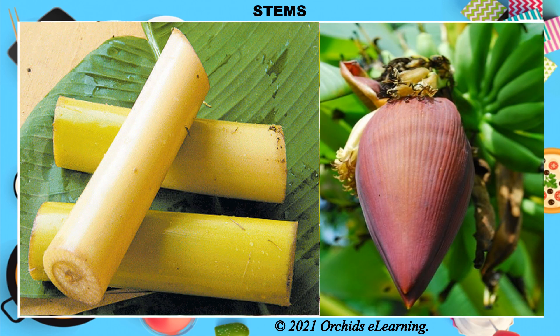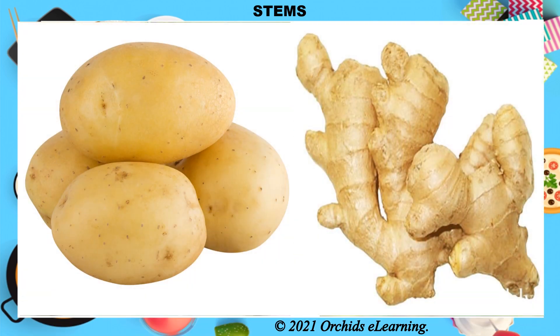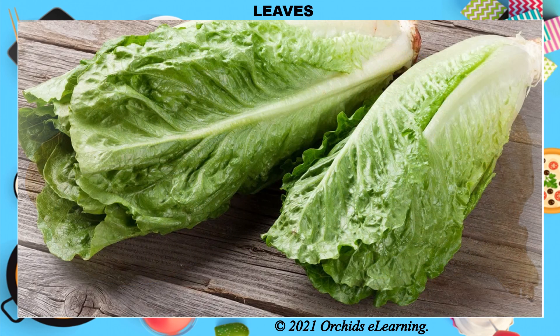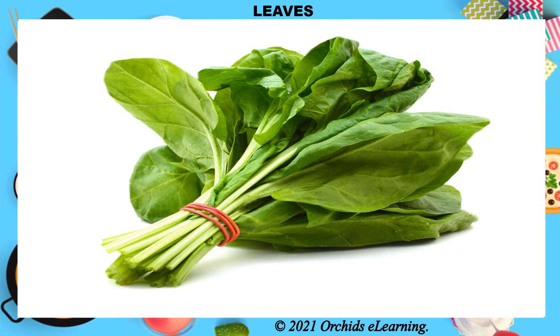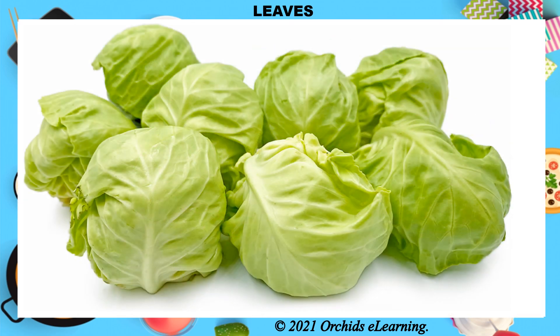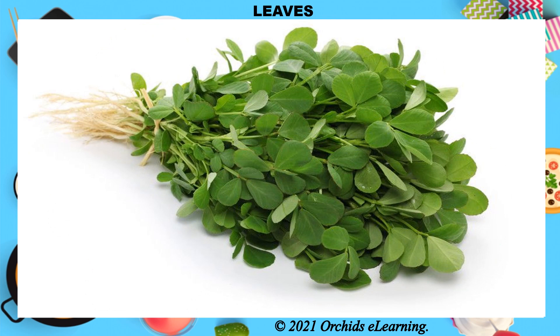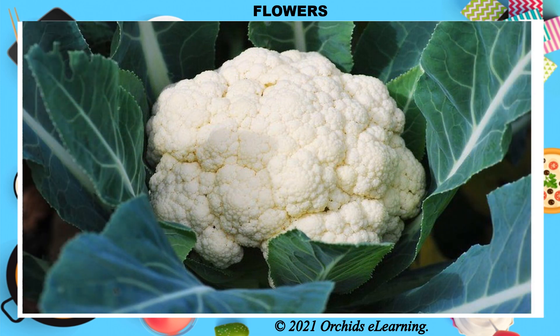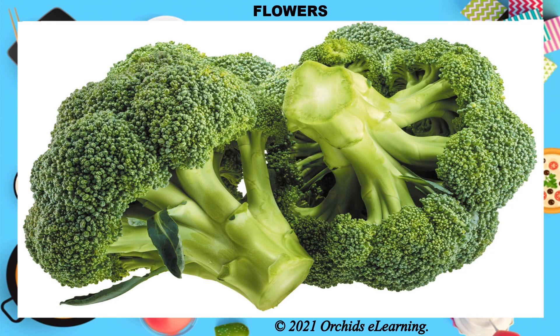The stem and flower of the banana plant are cooked and eaten in different parts of India. Certain plants have underground stems that we eat, such as potato and ginger. Leaves of plants such as lettuce, spinach, cabbage, and fenugreek (methi) are eaten by us. We also eat flowers of plants such as cauliflower, broccoli, and banana.